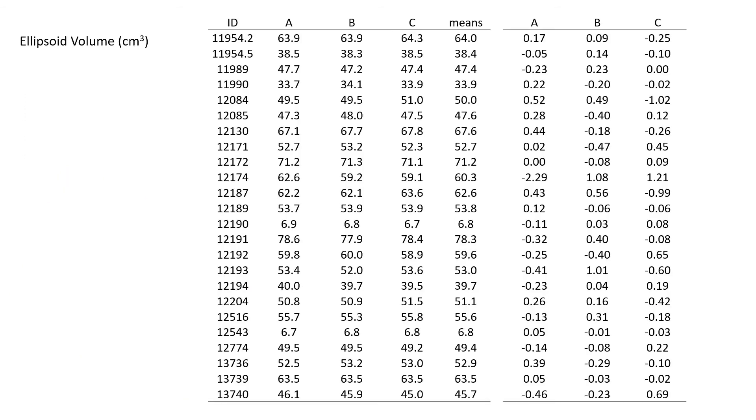So just to kind of beat that dead horse, on occasion A, I measured this ID number 11954.2. I measured its length, width, and height, and I used those linear measurements to determine an ellipsoid volume of 63.9 for that individual on that occasion.